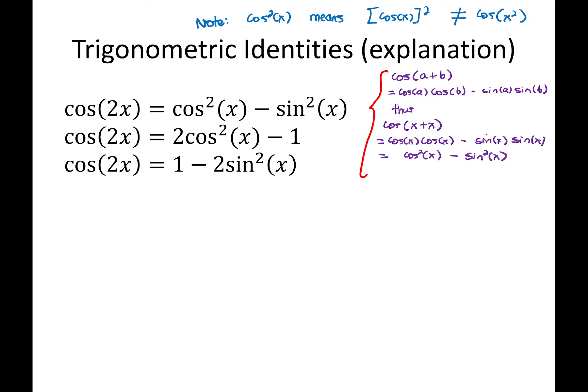Okay, so that describes where the first one comes from. What about the other ones? So cos of 2x is cos squared x minus sine squared x.